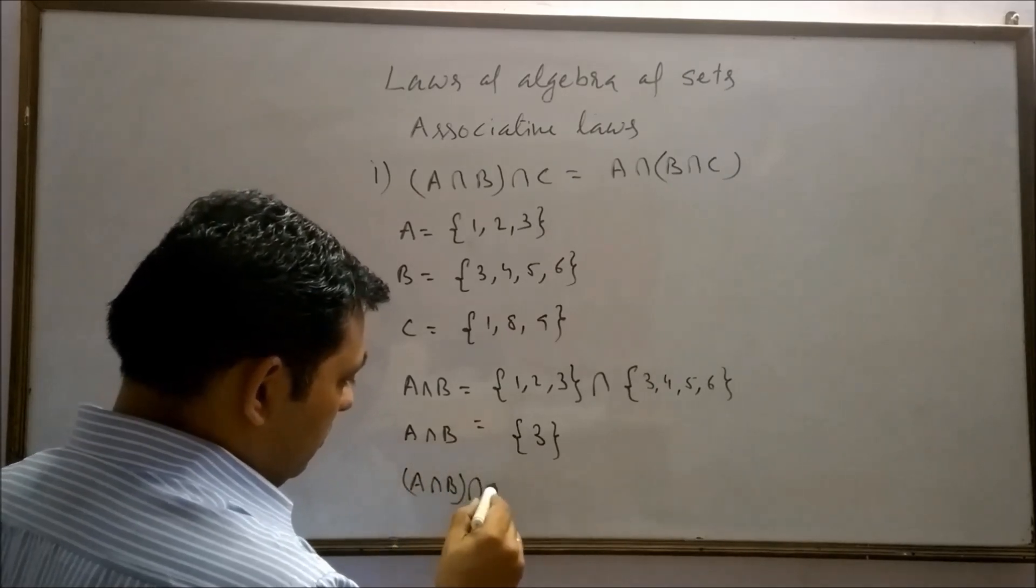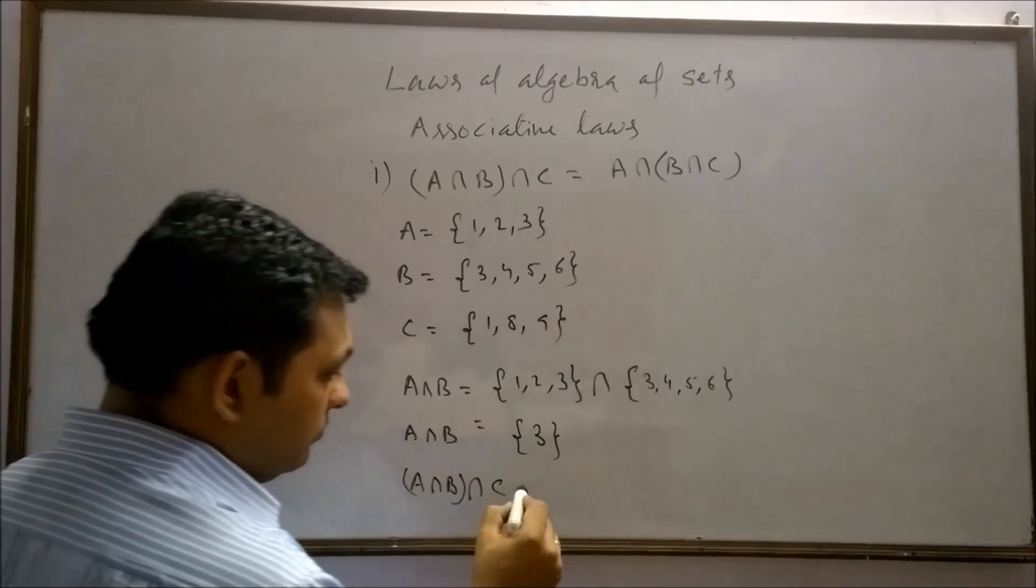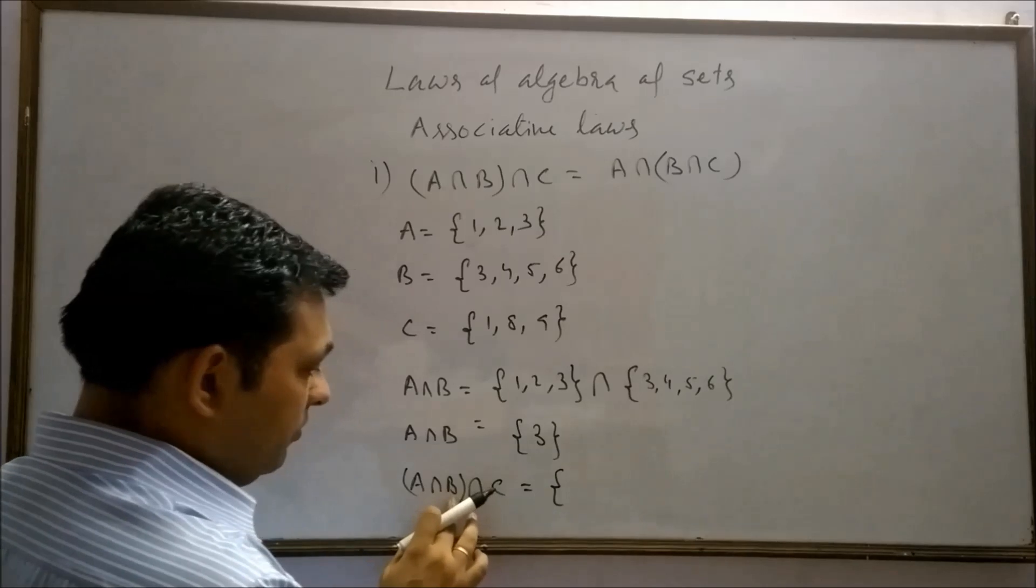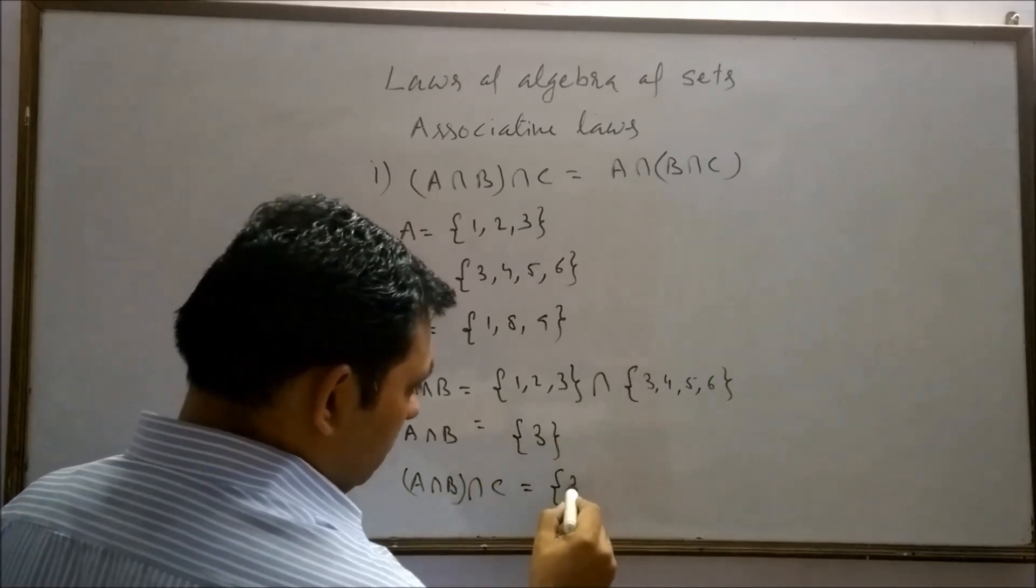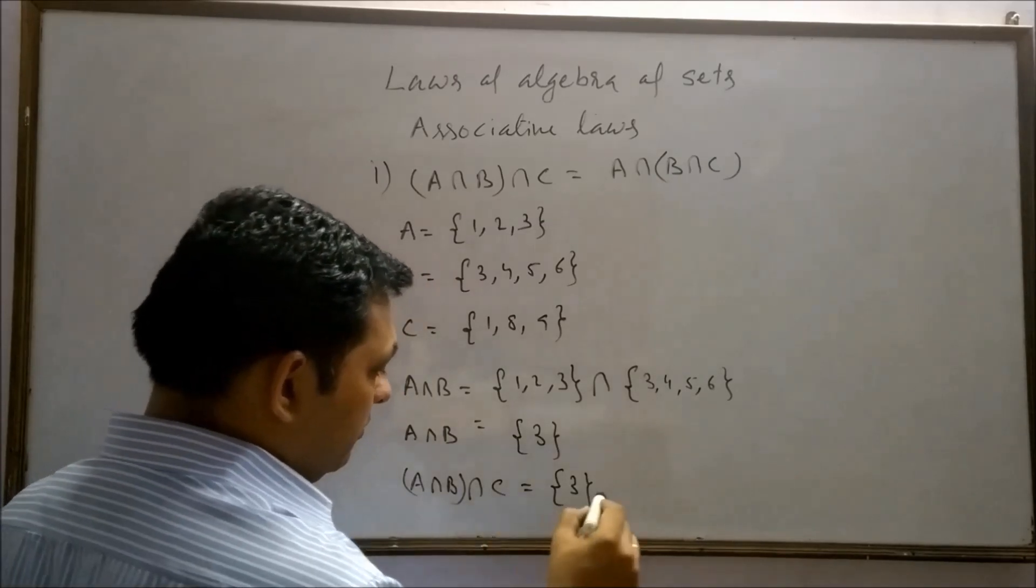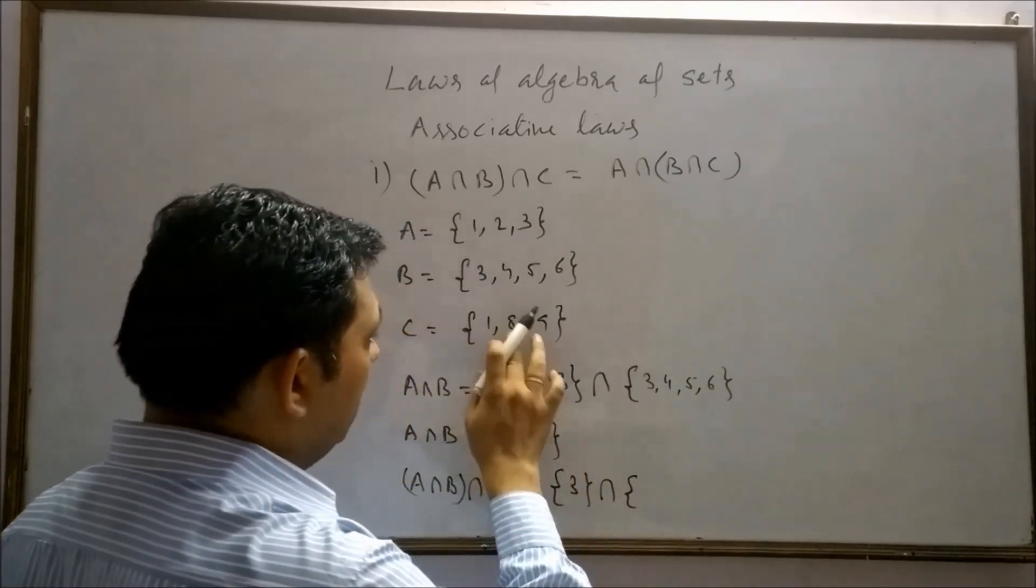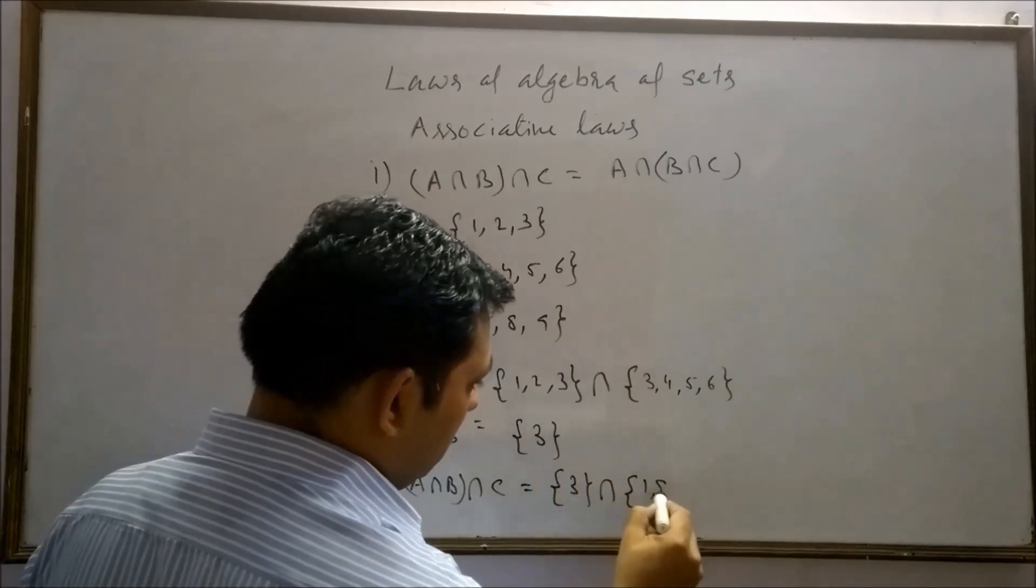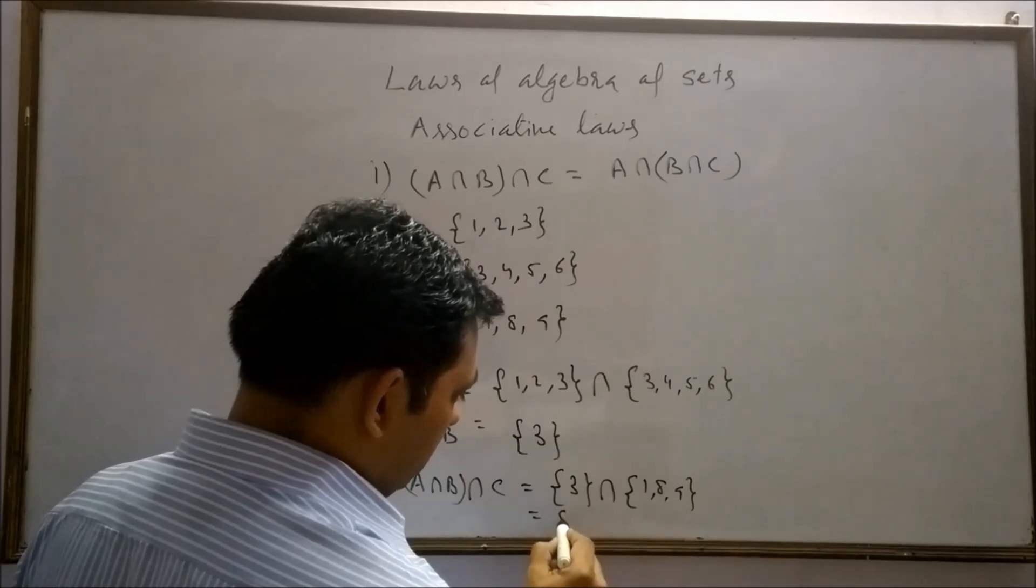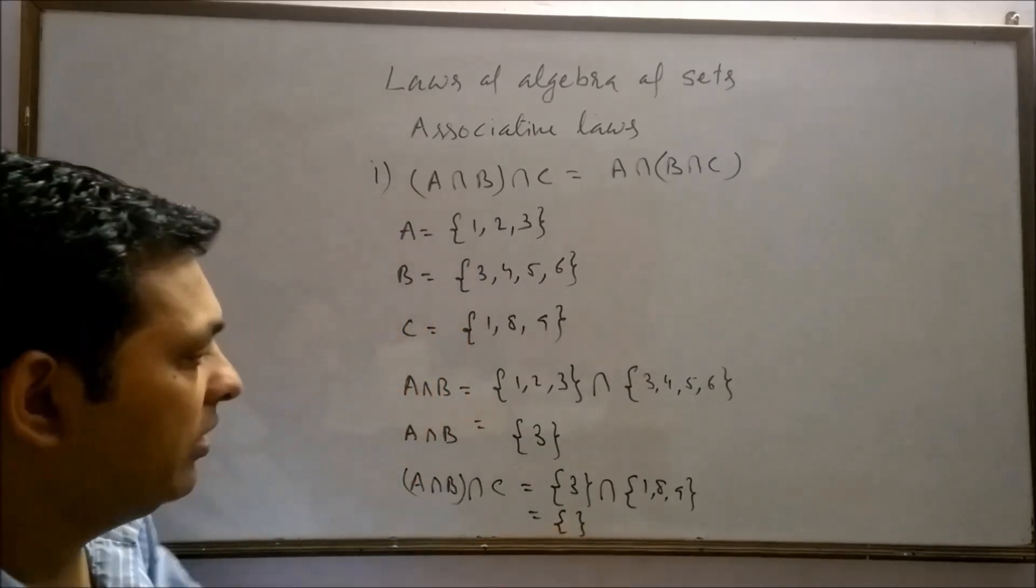Now take intersection with C. A intersection B, that is set containing element 3. Set C is 1, 8, 9. It means there is no common element. So we get the result empty set.